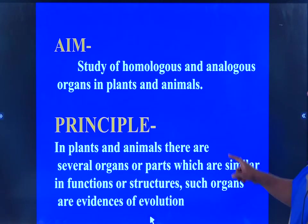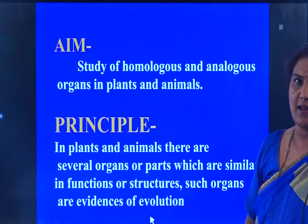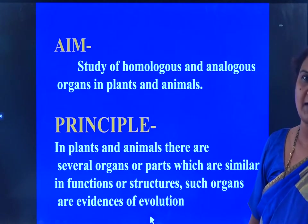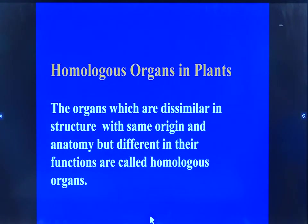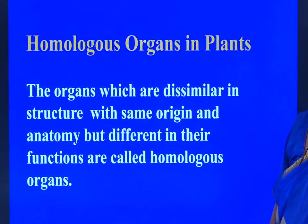In plants and animals, there are several organs or parts which are similar in their functions or structures. Such organs happen to be evidence for our evolution — so many similarities are there and slight differences are there. From the simplest form to the complex form, evolution occurs, and man marks the climax of evolution. What are homologous organs? They are organs which are dissimilar in their structure, with same origin and anatomy, but different in their functions. The term 'homo' itself indicates similarity or sameness.